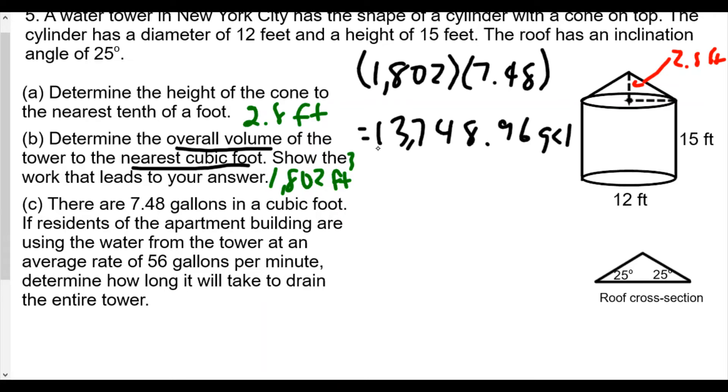That's how many gallons the water tower holds. We're told that the apartment building uses 56 gallons per minute. So we're going to take our total number of gallons and divide by 56. We divide by 56 to figure out how many minutes it's going to take before they would drain out the entire water tower.